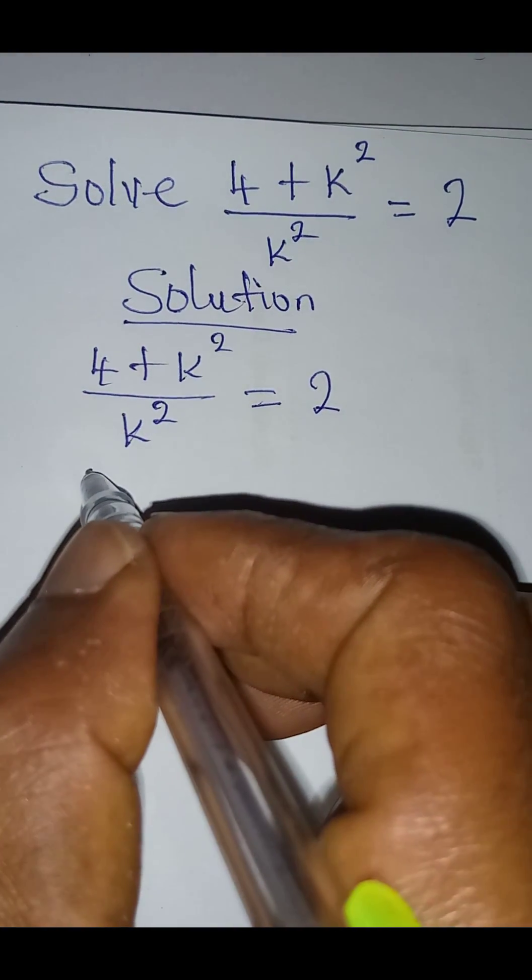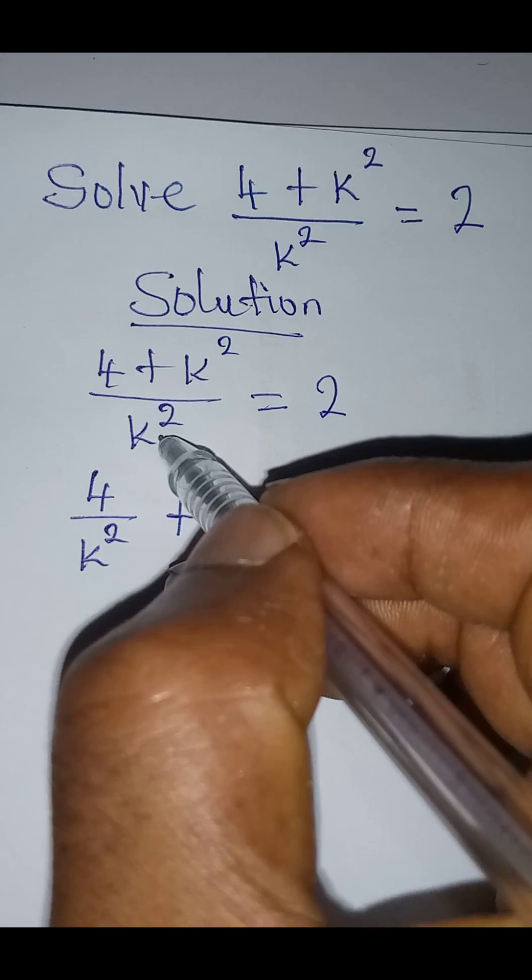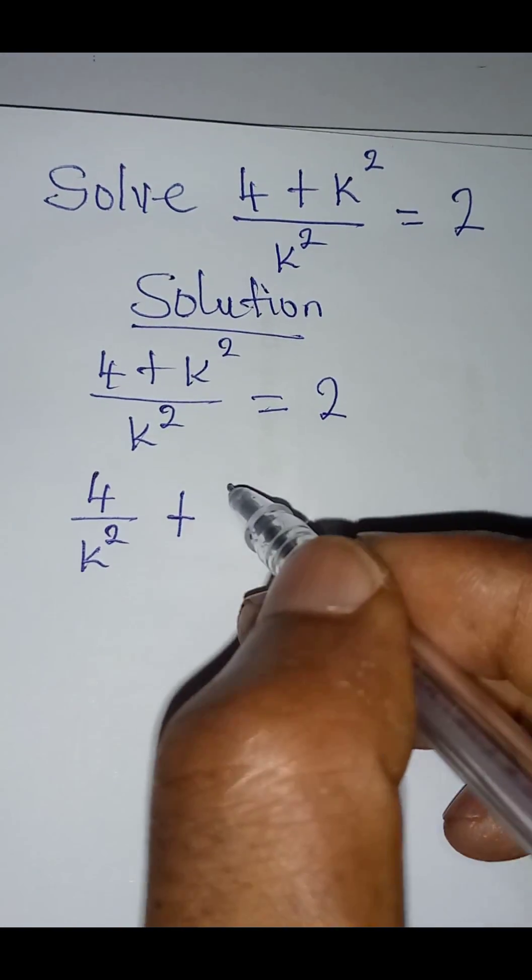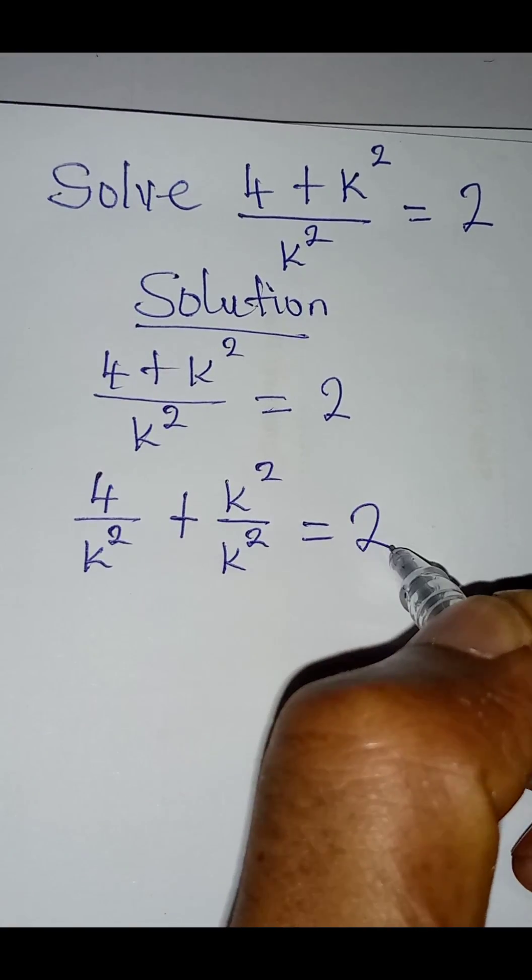Because this is the same thing as 4 over k squared, then plus this k squared will also work for the k squared in the numerator. So we'll have k squared all over k squared, then everything is equal to 2.